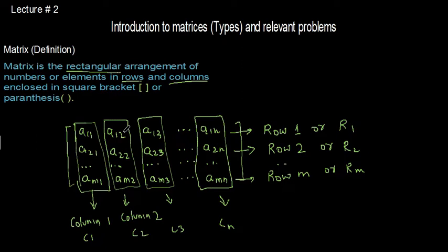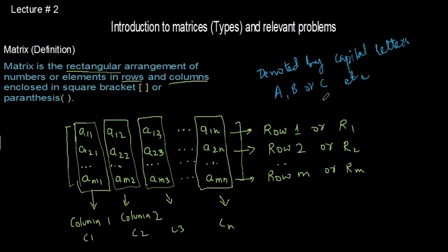Similarly, elements A12, A22 up to AM2 are the elements of the second column, indicated by C2. The remaining columns are C3 up to Cn. Note that matrices are denoted by capital letters such as A, B, or C, or any other capital letter used to denote the matrix.